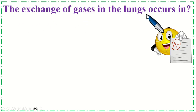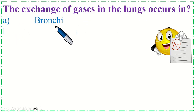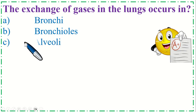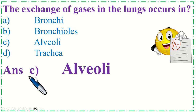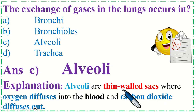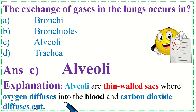The exchange of gases in the lungs occurs in: Option A: Bronchi, B: Bronchiole, C: Alveoli, and Option D: Trachea. The correct option is C, Alveoli. Alveoli are thin-walled structures where oxygen diffuses into the blood and carbon dioxide diffuses out.